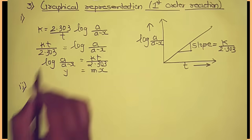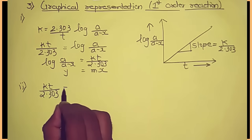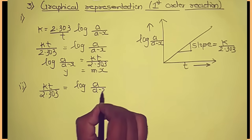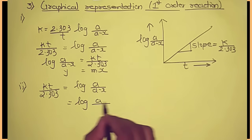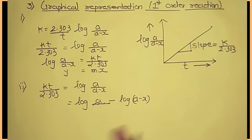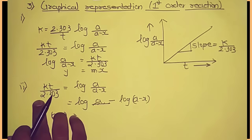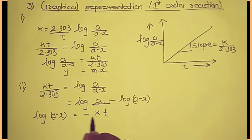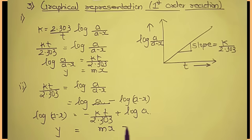In the second case, rearranging the same equation: kt upon 2.303 equals log of a upon a minus x, which equals log a minus log of a minus x. Bringing log of a minus x to the left-hand side and kt to the right, we get log of a minus x equals minus kt upon 2.303 plus log a. This equation is in the form of y equals mx plus c.